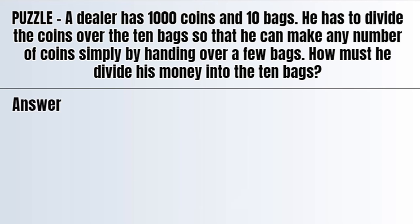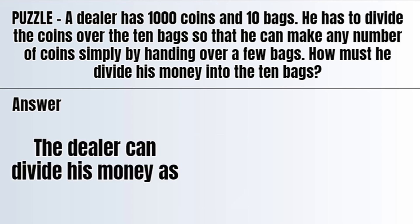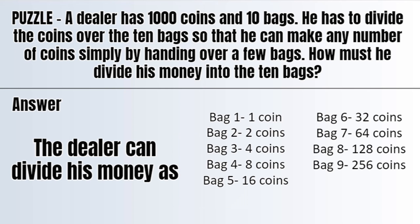Hope everyone has given their answer in the comment section. Now I will tell you the correct answer of this puzzle. So how to solve this is: the dealer can divide his money as — in bag 1, he can put 1 coin; in bag 2, he can put 2 coins; in bag 3, 4 coins.